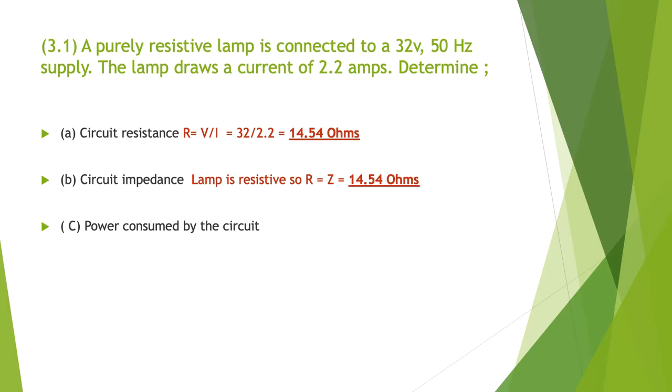The lamp resistance is also R equals Z, also 14.54 Ohms. So in a purely resistive circuit R and Z are the same thing, 14.54 Ohms.